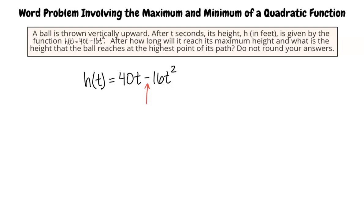The question asks for two responses, the time it takes for the ball to reach its maximum height, and the height that the ball reaches at the highest point of its path. You may recall from your study of previous topics that the maximum or minimum value of a quadratic function and the value of x, in this case the value of t, at that maximum or minimum value can be found by finding the vertex of the parabola. So let's get started.